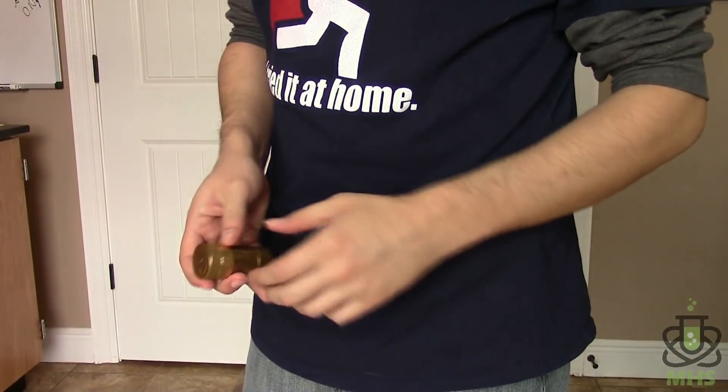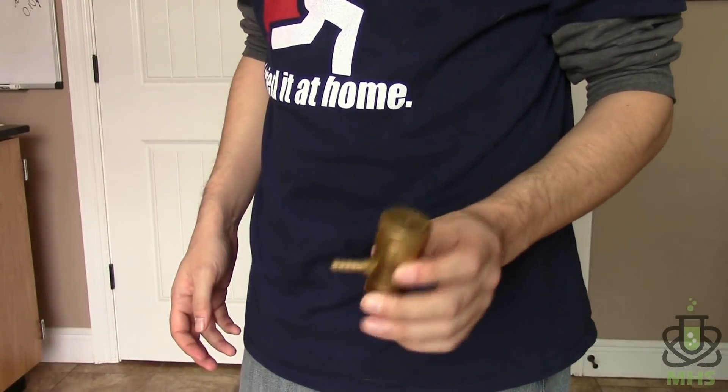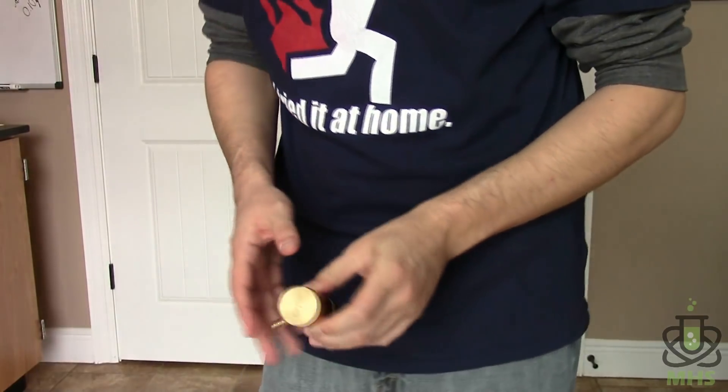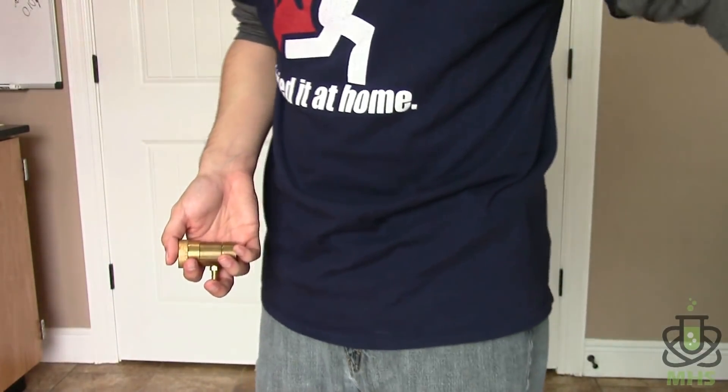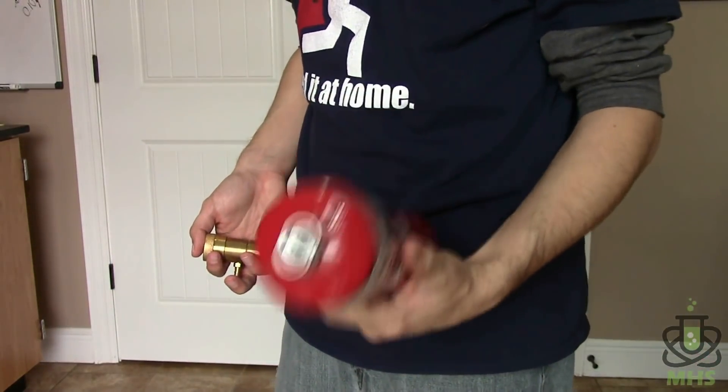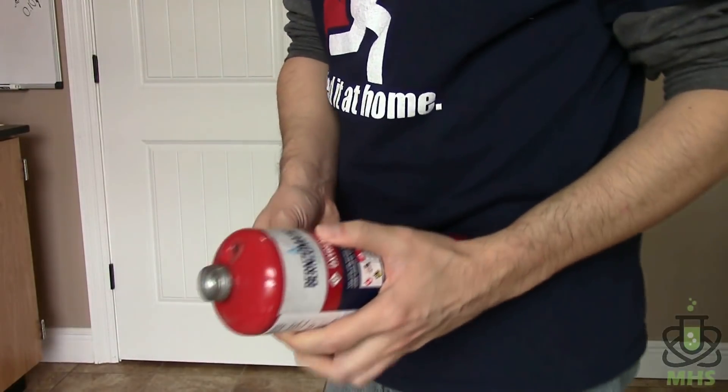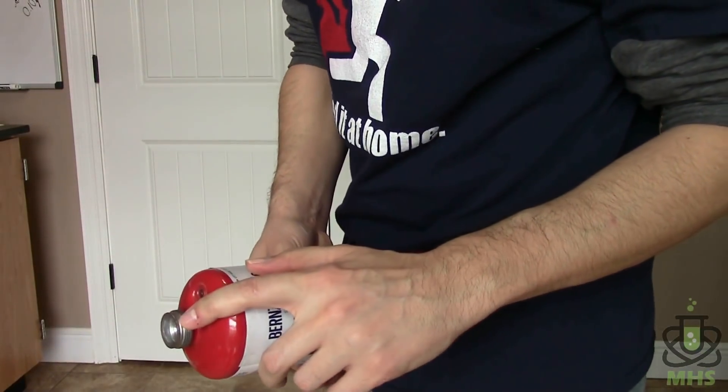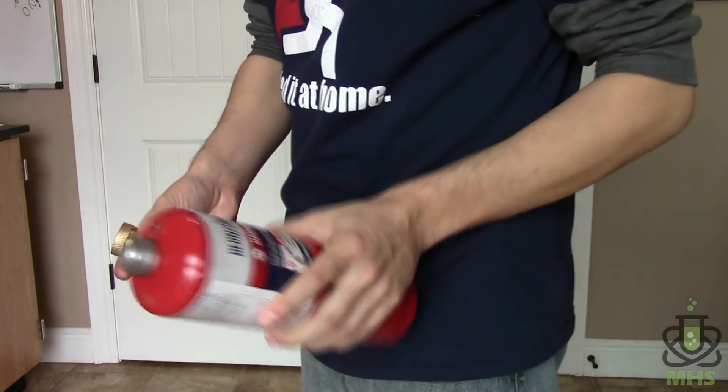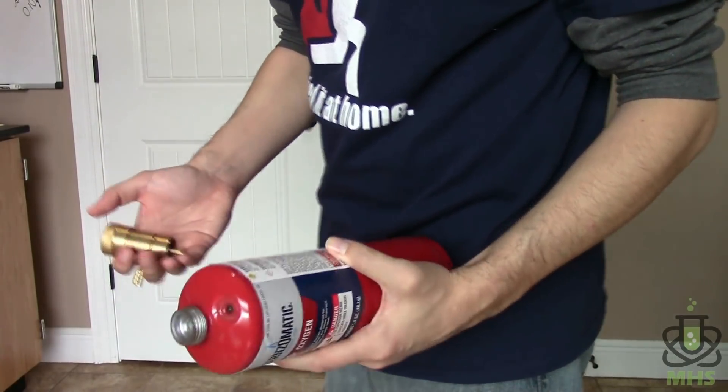I wanted to demonstrate real quick how to use this regulator because it is not at all obvious. I had to go look at another video that showed how to use it. So you got your oxygen bottle and the real trick here is that these threads are reverse threads. So it's actually lefty tighty which is weird.